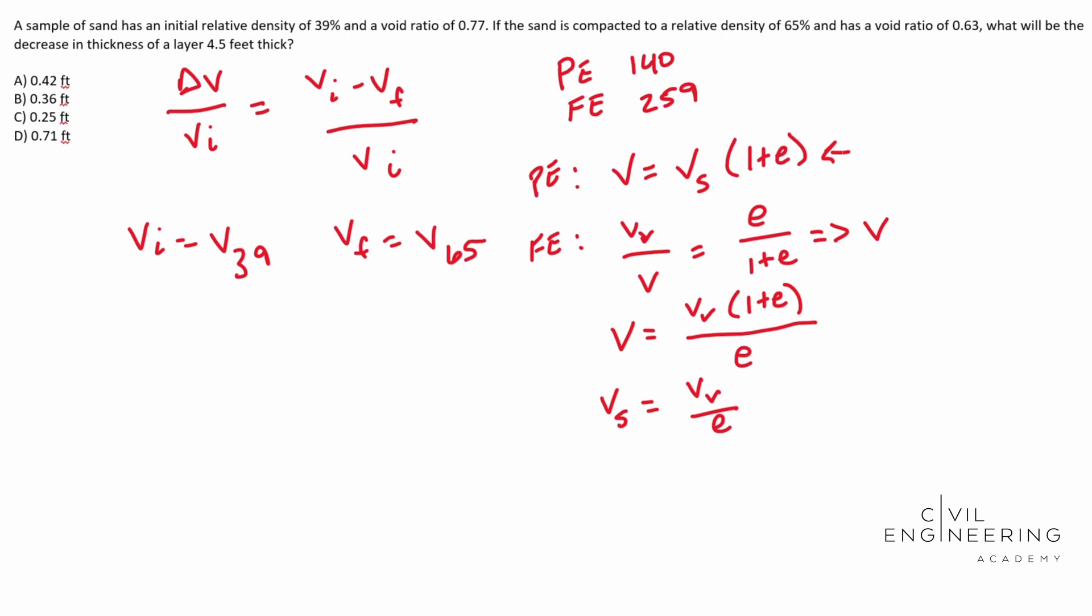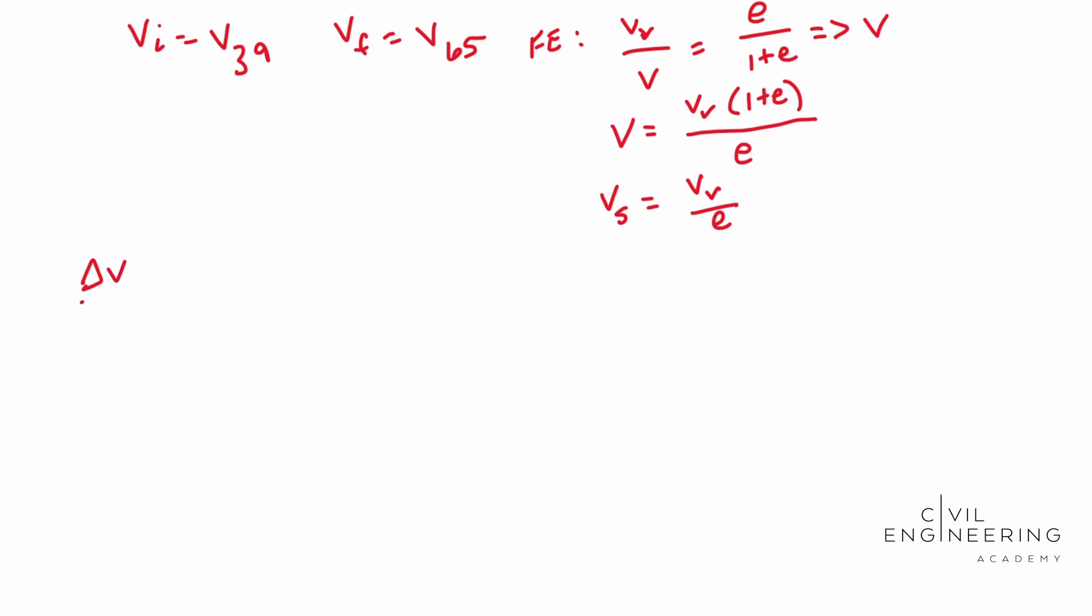So let's go ahead and do that. So we're going to scroll down here and remember what we came up with Delta V over VI. Let's plug it in volume of our solids times one plus E 39 minus volume of your solids times one plus E 65. Alright. And so now you can kind of see the correlation here. We have our this is our V 39. This is our V 65. And this is our V 39.